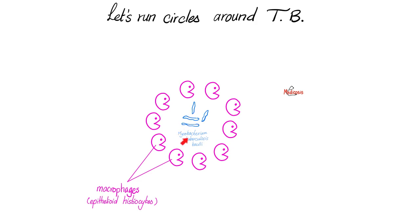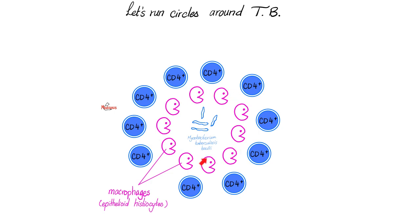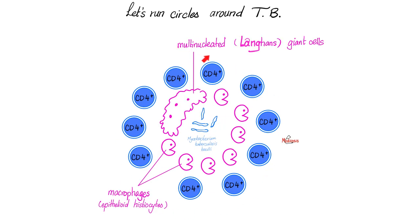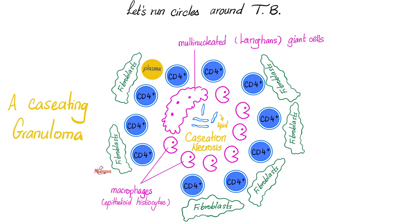How do we run circles and make a granuloma around mycobacterium tuberculosis? Here are the TB bacilli. We surround them with macrophages, here known as epithelioid histiocytes — epithelioid because they look like epithelial cells, histiocytes because they are in the tissue, not floating freely in the bloodstream where they are called monocytes. Don't forget who activated the macrophages: T helper 1, CD4, T lymphocytes. They will also run circles around tuberculosis. Many of these macrophages will join forces and combine to make a humongous multi-nucleated giant cell.